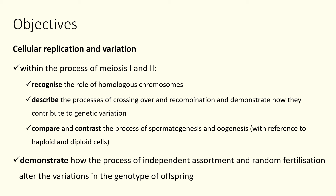These four processes are what leads to genetic variation in our offspring — that's what makes offspring completely genetically different from their parents. What we're going to go through today is looking at these processes and how they lead to genetic variation.